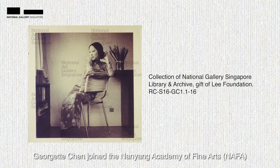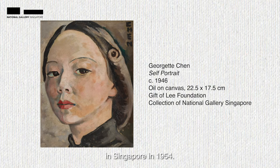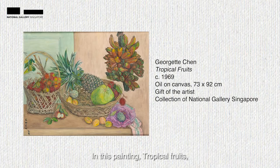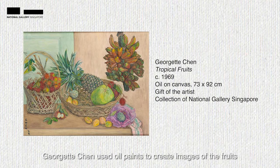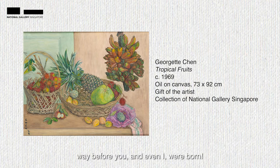Georgia Chen joined the Nanyang Academy of Fine Arts in Singapore in 1954. She was the first woman to teach at NAFA. Today there are more female artists like me teaching at NAFA. In this painting, Tropical Fruits, Georgia Chen used oil paints to create images of the fruits on a piece of canvas. She created it in 1969, way before you and even I were born.